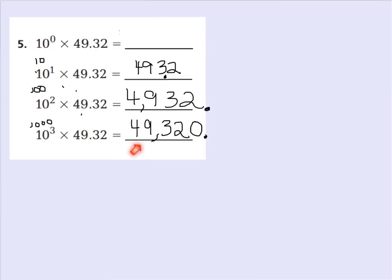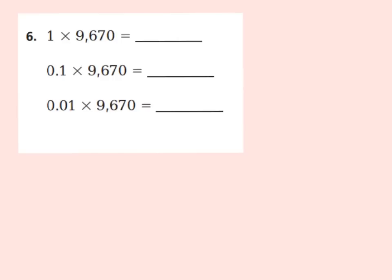Notice how this is an increased number because we multiplied it by a power of 10 greater than 1. I want you to go ahead and pause this video and see if you placed your decimal points in the correct position. Remember that you are multiplying by a power of 10 that is less than 1, so your decimal point should be going to the left. Go ahead and press pause, and then we'll check our answers together.